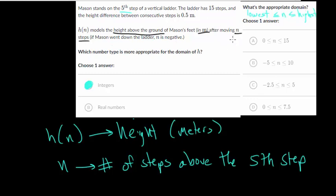So n remember, that's just how many steps he's moving. And so if he's starting on the fifth step, he could move down, he could actually move down five units. So the lowest amount that he can move would be down five.